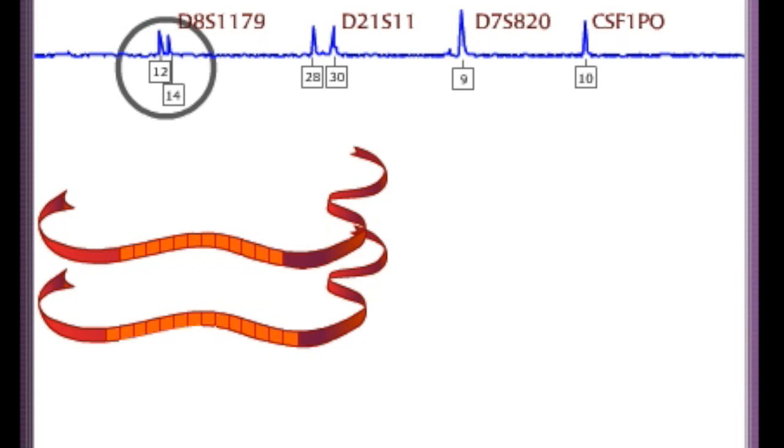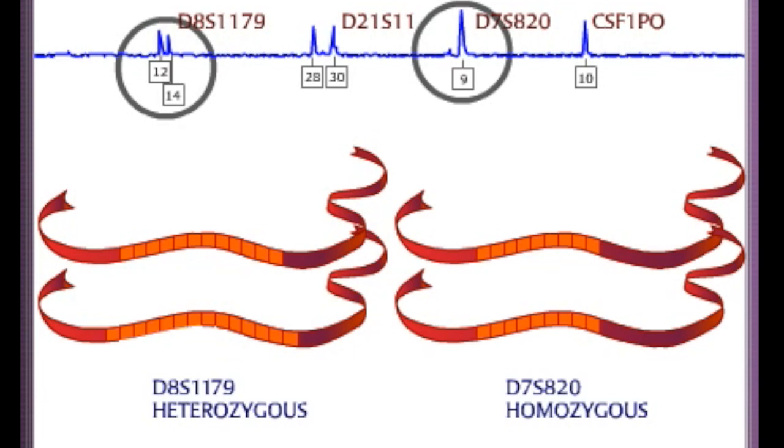For example, this person is heterozygous for D8S1179. He has 12 repeats on one chromosome and 14 repeats on the other. He is also heterozygous for D21S11. This person is homozygous for D7S820. Both chromosomes have 9 repeats. He is also homozygous for CSF1PO.